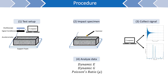Lastly, the collected signals can be analyzed to determine their respective resonant frequencies. These frequencies are then used to determine the desired properties such as the dynamic modulus of elasticity, dynamic modulus of rigidity, and Poisson's ratio of the concrete specimen. Those properties can then be used to characterize and monitor the quality of the concrete.